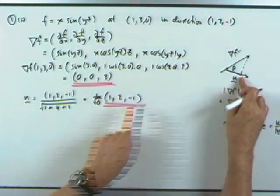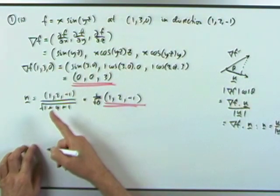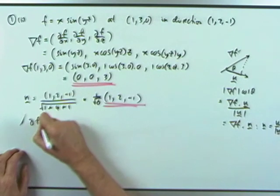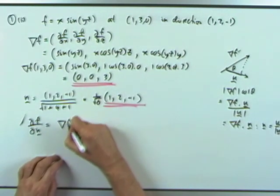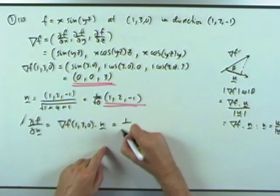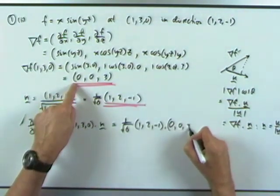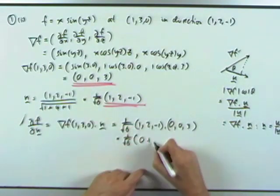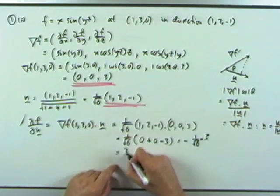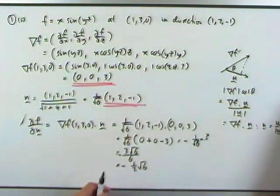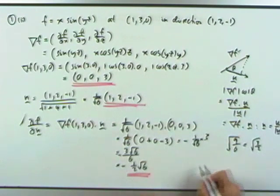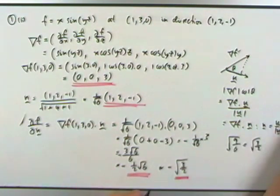So that's negative 3 upon root 6. Rationalising the denominator: 3 times root 6 over 6, negative of that, gives negative one half root 6. Or alternatively, putting the 3 back up to 9 and into the square root bracket with the 6 gives negative root 3 over 2, if you prefer that form.